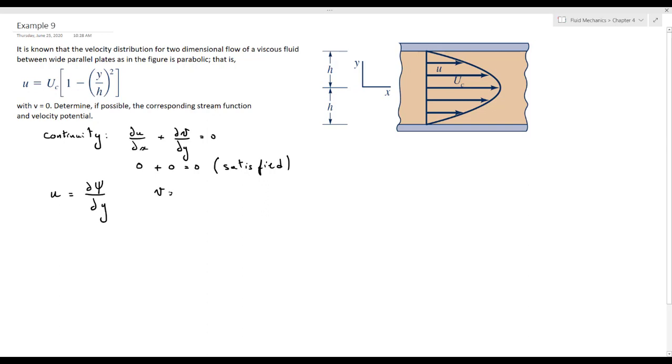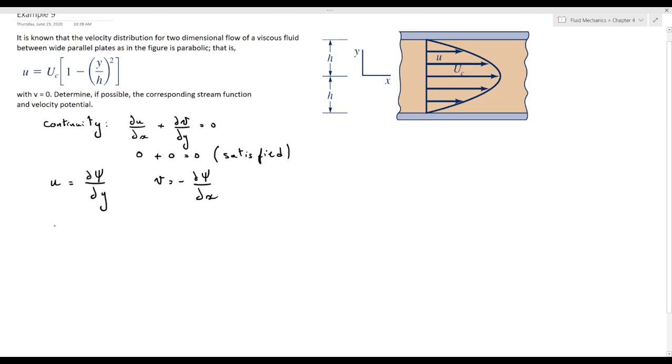From the definition of the stream function, u is equal to del psi over del y and v is equal to minus del psi over del x. Then psi is equal to the integral of u dy, partial integral, so integral of uc into 1 minus y over h squared dy.